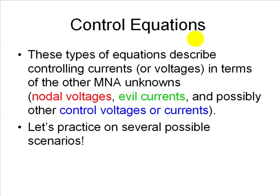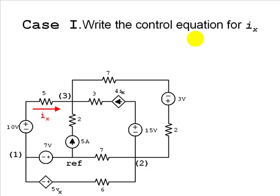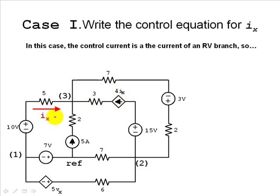Let's practice on several possible scenarios — this is the purpose of this tutorial. Case 1: we have a current-controlled current source. This current source depends on IX, which is the current in this 5-ohm resistor. The controlling current is simply the current in an RV branch. So we can write IX as a function of V1 and V3: IX equals V1 minus V3 plus 10 volts, divided by 5 ohms. That is our CTL1 equation.